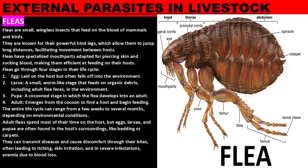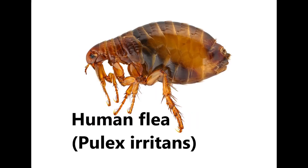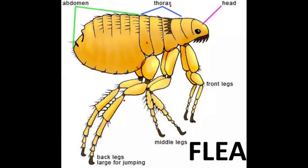Fleas are small, wingless insects that feed on the blood of mammals and birds. They are known for their powerful hind legs, which allow them to jump long distances, facilitating movement between hosts. Fleas have specialized mouthparts adapted for piercing skin and sucking blood, making them efficient at feeding on their hosts.